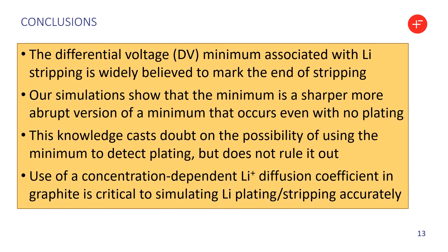So what have we learned? The differential voltage minimum associated with lithium stripping is widely believed to mark the end of the stripping process. But our simulations show the minimum is in fact a sharper, more abrupt version of a minimum that occurs anyway, even with no plating. This knowledge does not rule out the possibility of using the minimum to detect plating, but does cast doubt on that possibility. Finally, using an experimentally-validated, concentration-dependent lithium ion diffusion coefficient in graphite is essential to simulating lithium plating properly.